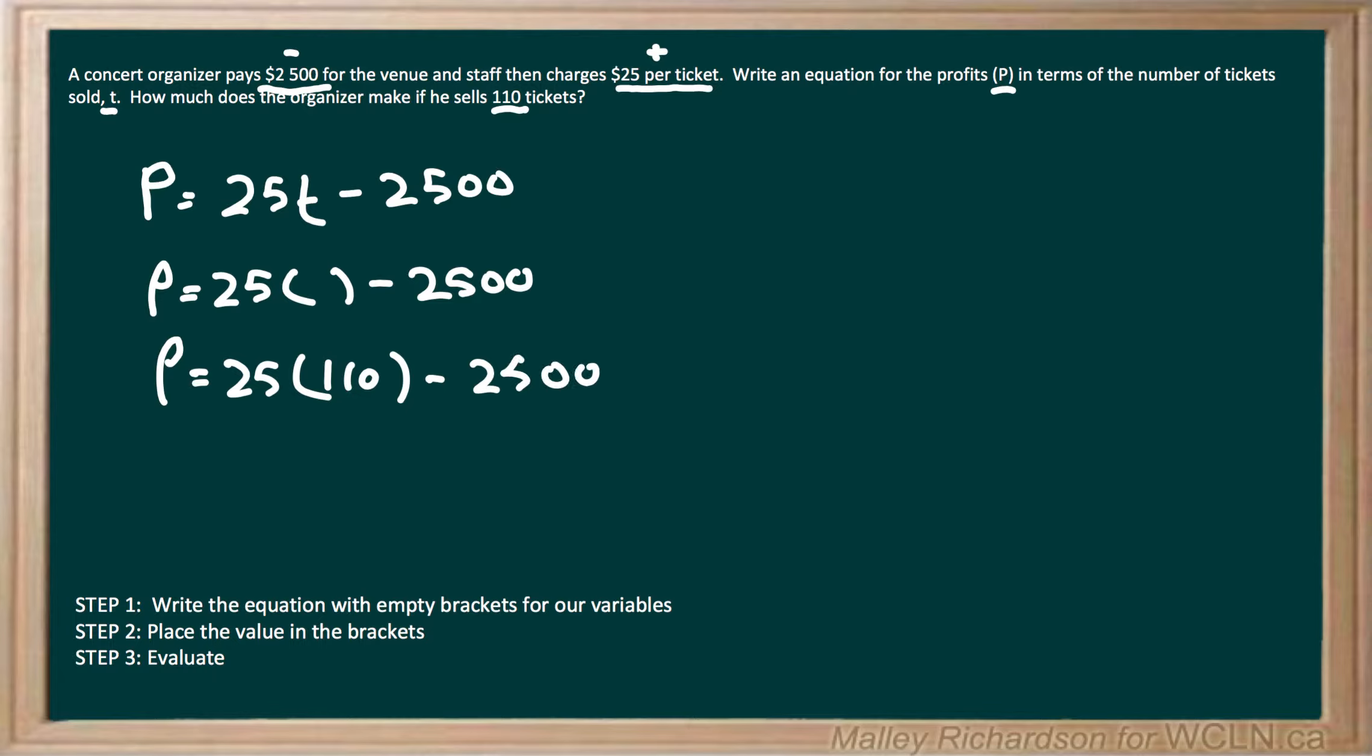And now we need to go on to step 3, which is just to evaluate. 25 times 110 is 2,750, and then minus 2,500. 2,750 minus 2,500 leaves us with 250. So his profit is going to be $250.